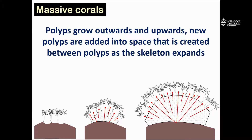Over time, these mound-shaped colonies can grow to be very large, several meters in diameter, and they always grow by the polyps growing outwards and upwards, leaving behind a dense, solid skeleton with a thin layer of tissue on the outside.